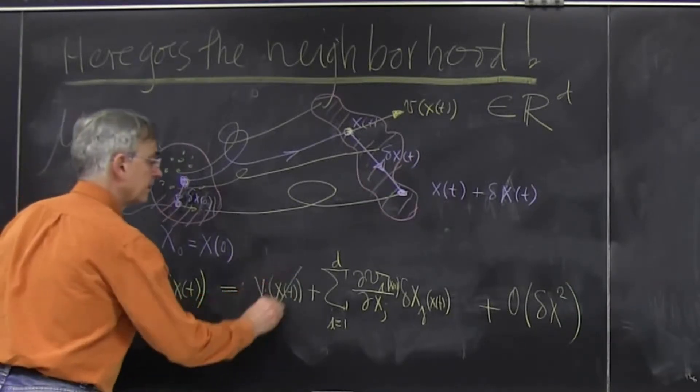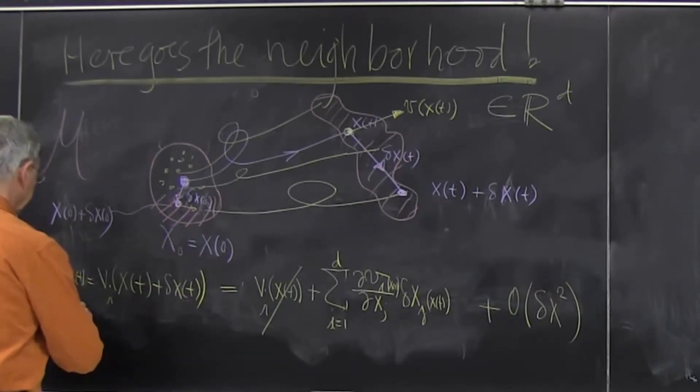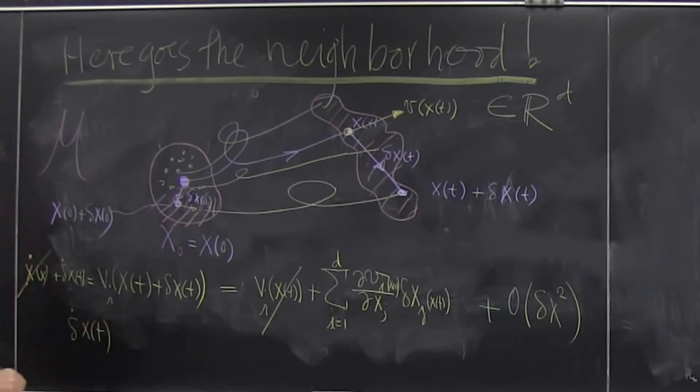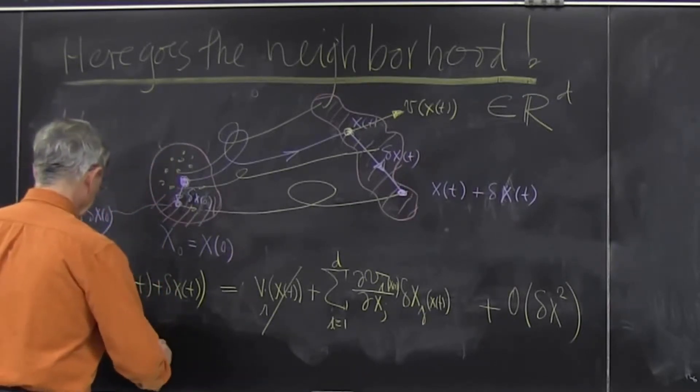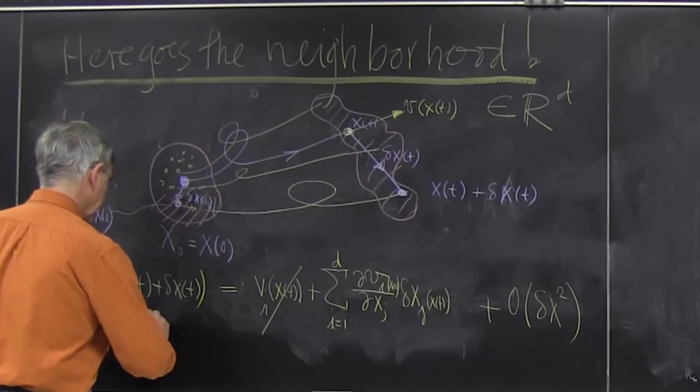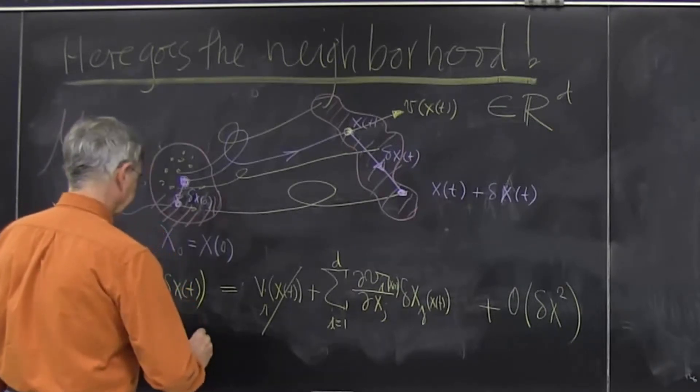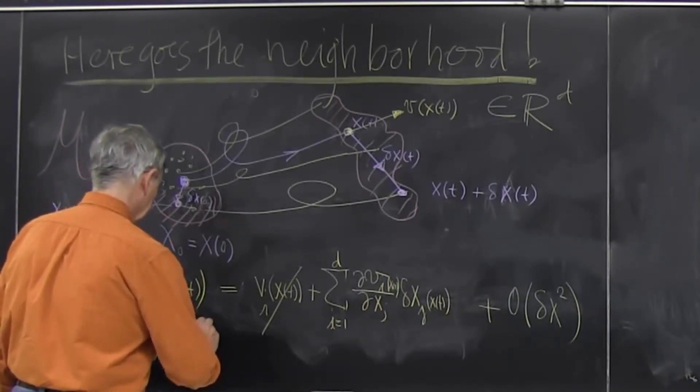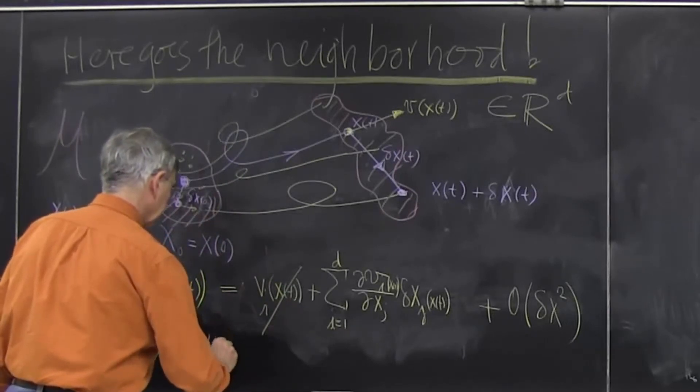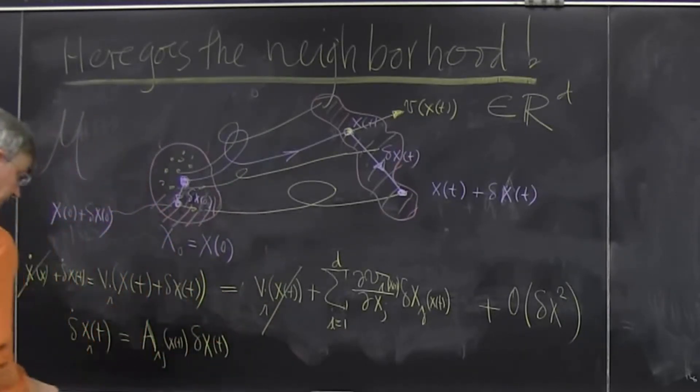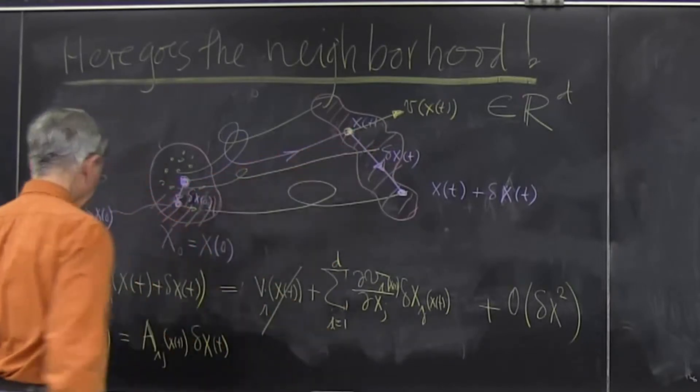Then this cancels out, and we get that delta x of t satisfies a linear differential equation. So I'll write it this way: i component matrix ij evaluated at x of t times the vector at that point. So this is now linear differential equation for how this vector changes in time.